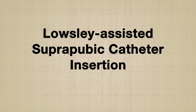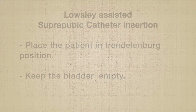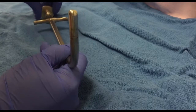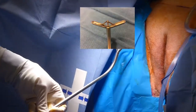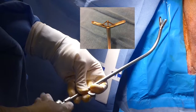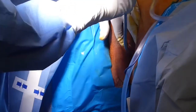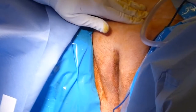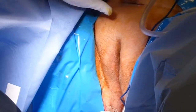The Lousley-assisted suprapubic catheter insertion: Place the patient in Trendelenburg position and keep the bladder empty. The Lousley retractor is a single unit reusable instrument. Open and close the retractor jaws to test it before using it on the patient. Insert the Lousley into the urethra and pass it through the urethra and the bladder, then adjust your grip and aim the tip towards the anterior abdominal wall. Palpate the Lousley tip 3 cm above the pubic symphysis.